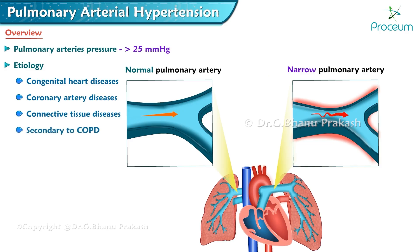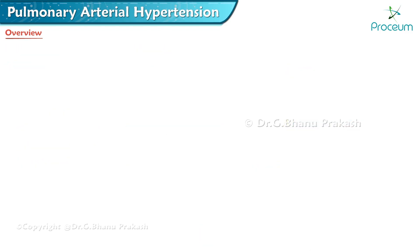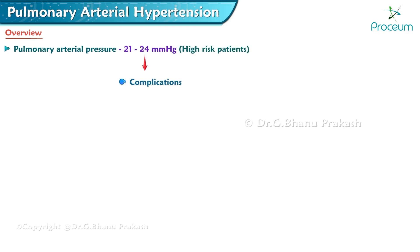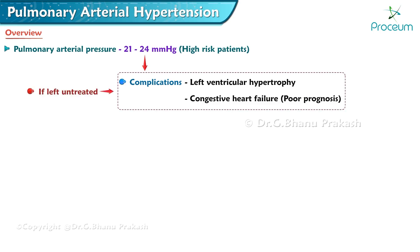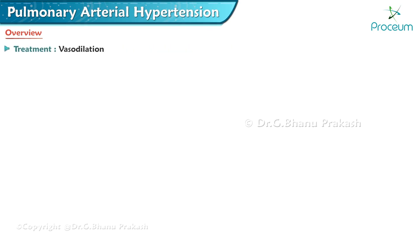Interstitial lung diseases and emphysema are also causes. Patients with pulmonary arterial pressure of 21 to 24 millimeters of mercury are considered high-risk and are expected to have complications like left ventricular hypertrophy and poor prognosis in cases of congestive heart failure if left untreated.